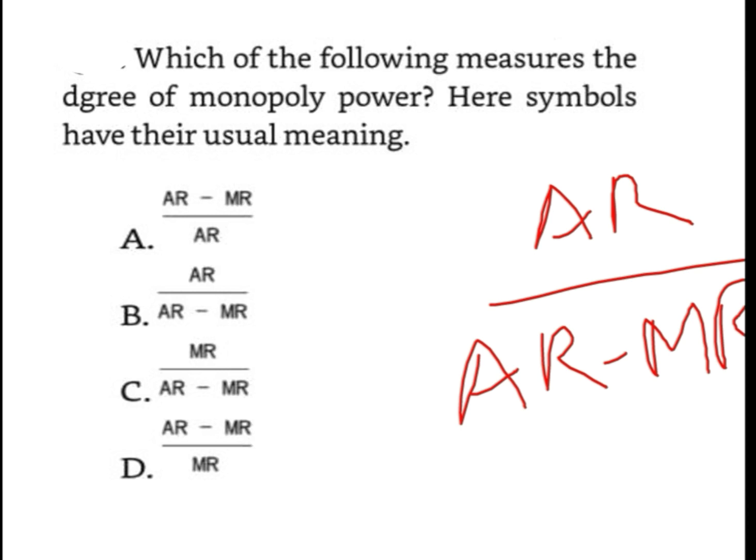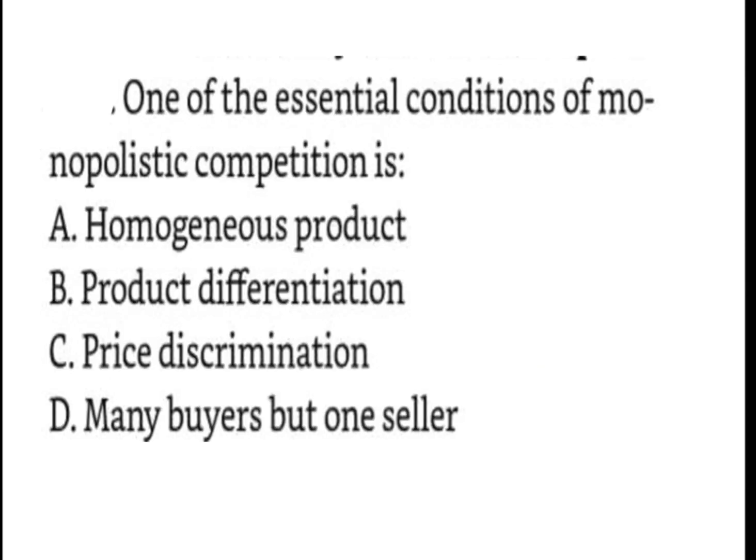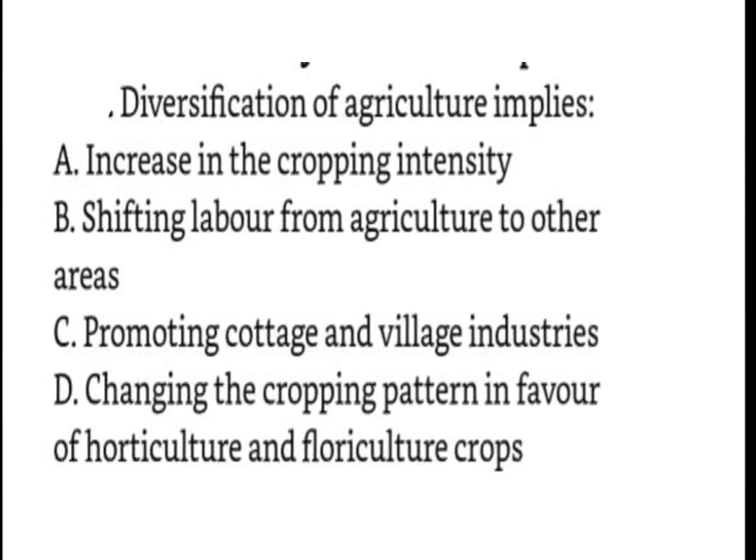Now the next question is: one of the essential conditions of monopolistic competition is? The question said monopolistic competition and the answer will be product differentiation. And if our question says one of the essential conditions of perfect competition, then it will be homogeneous product.